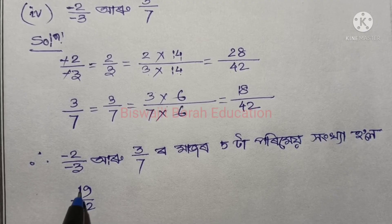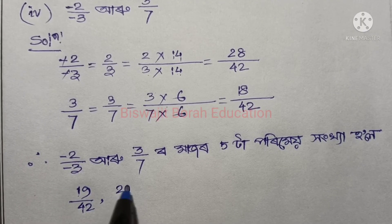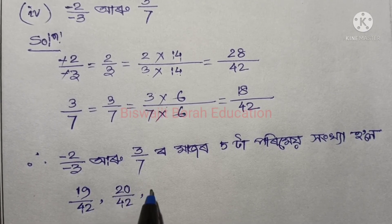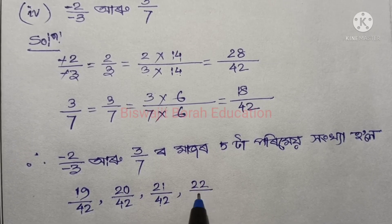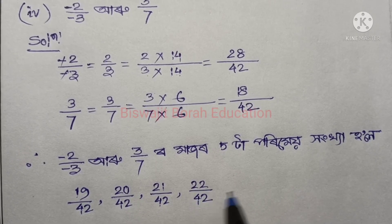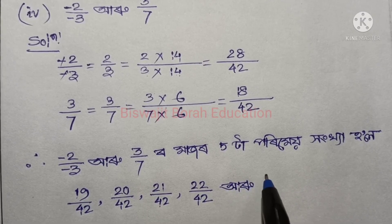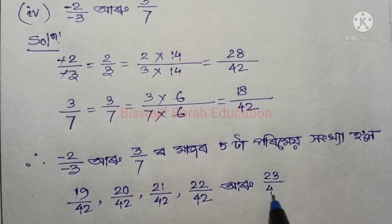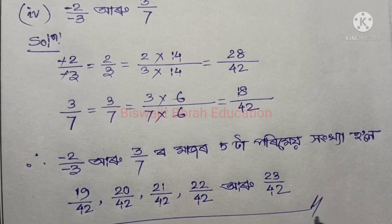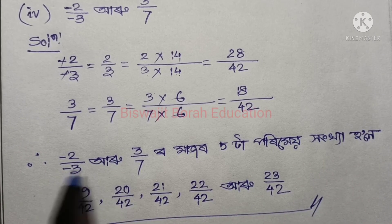20 by 42, 21 by 42, 22 by 42, and 23 by 42. So, a pasta is minus 2 by 3, minus 3, and 3 by 7 is more than 1.